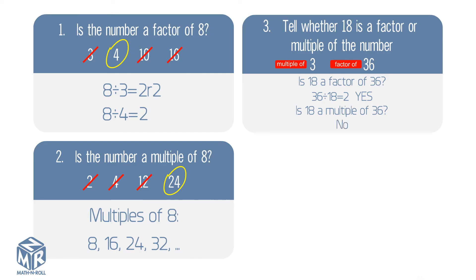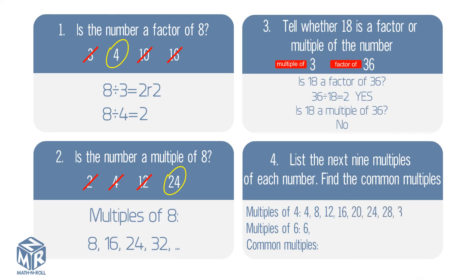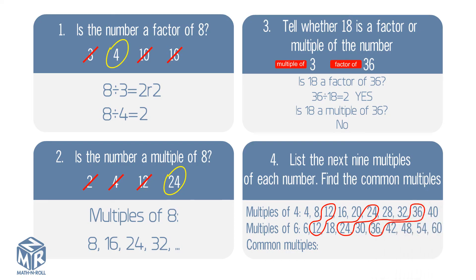Is 18 a multiple of 36? No, because all multiples of 36 are greater than or equal to 36. Let's try another question: list the next 9 multiples of each number and find the common multiples. Let's multiply 4 by counting numbers to find the multiples of 4, and multiply 6 by counting numbers to find the multiples of 6. A common multiple is a multiple of 2 or more numbers. The multiples that exist for both 4 and 6 are 12, 24, and 36, so these are the common multiples of 4 and 6.